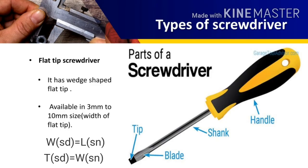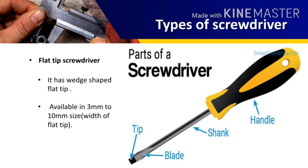The first one is the flat tip screwdriver. The flat tip screwdriver is used for screws that have a straight notch on their head. These screwdrivers are available in 3 to 10 mm size. While selecting the screwdriver for a specific screw, the width of the screwdriver must be equal to the length of the screw notch and the thickness of the screwdriver must be equal to the width of the notch for a better grip.